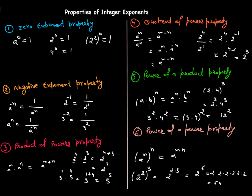Fifth, power of a product property: a product of two numbers raised to an exponent means you put the exponent separately on both numbers. The reverse is also true — if two numbers with different bases but the same exponent are multiplied, combine them: multiply the bases and use the one exponent. Sixth, power of a power property: a raised to power m, raised to power n — multiply the two powers to get a raised to power m times n. I hope this helps — thanks for watching, please share with your friends and subscribe!